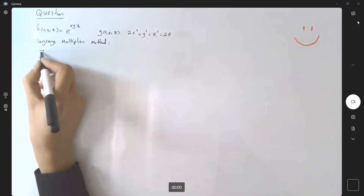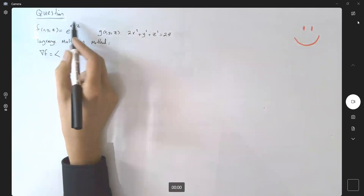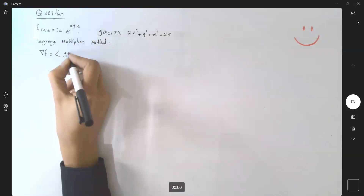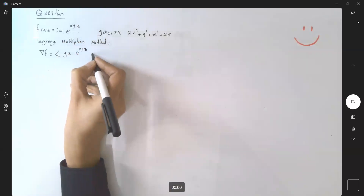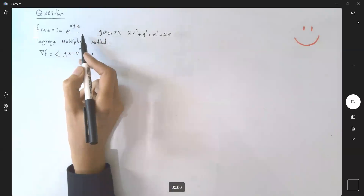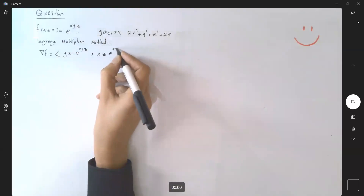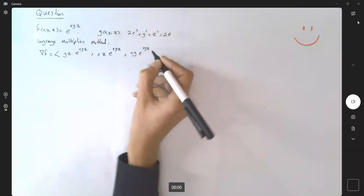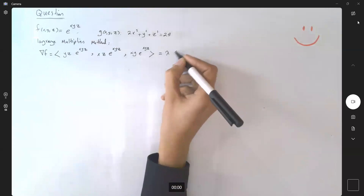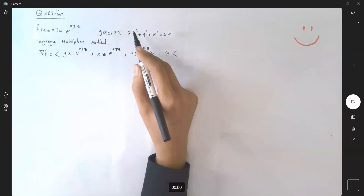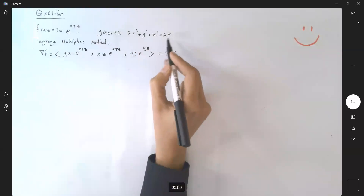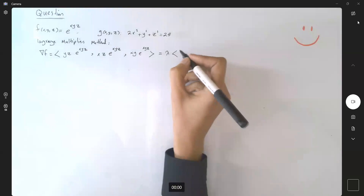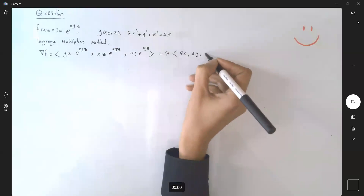We need to find the gradient of f. Taking the partial derivative with respect to x first, it becomes yz·e^(xyz). The partial derivative with respect to y is xz·e^(xyz), and the partial derivative with respect to z gives us xy·e^(xyz). This equals lambda times the gradient of the constraint, which has components 4x, 2y, and 2z.